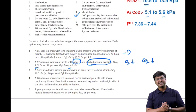In acute anaphylaxis, the treatment is 100% oxygen therapy, intramuscular adrenaline, and nebulized salbutamol. One confusing option uses 28% oxygen — remember to give 100% oxygen in acute anaphylaxis. Another confusing option uses intravenous hydrocortisone — but the drug of choice for acute anaphylactic reaction is adrenaline, not hydrocortisone.